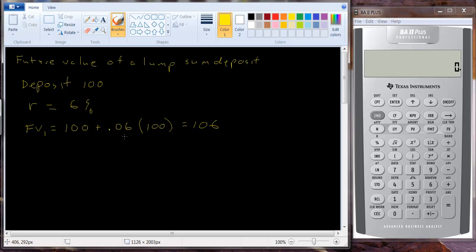But if you look at this equation there's a hundred in both terms here. We can factor that out. So we have a hundred times one plus point oh six equals a hundred and six. Now this is our formula for the future value in year one.